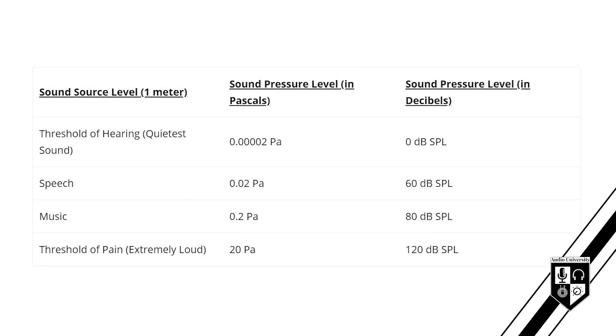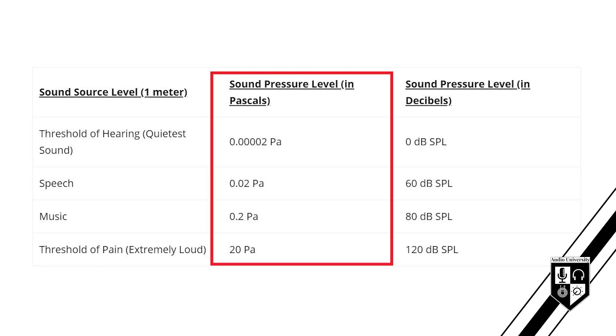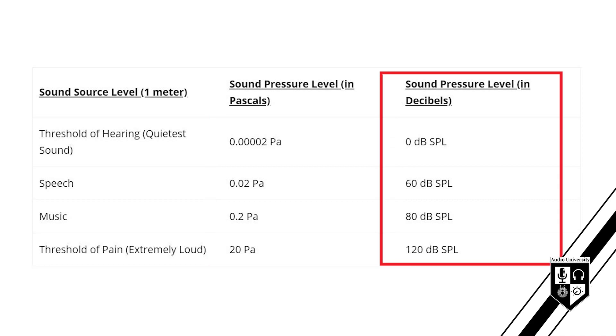This chart shows why decibels are so much easier to work with than pascals. These values are written from quietest on top to loudest on bottom. In the first column, you see the range of human hearing represented in pascals — numbers that are not very convenient for calculation or communication. Using the logarithmic scale of decibels provides much more manageable numbers. All you need to know is that when you're talking about sound pressure level, adding six decibels doubles the sound pressure level, whereas subtracting six decibels cuts the sound pressure level in half.